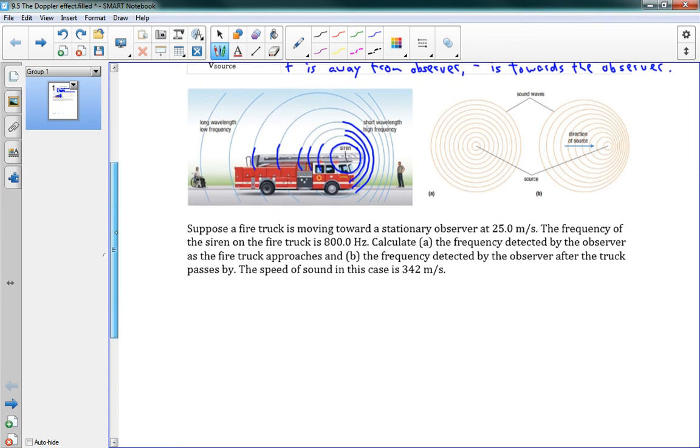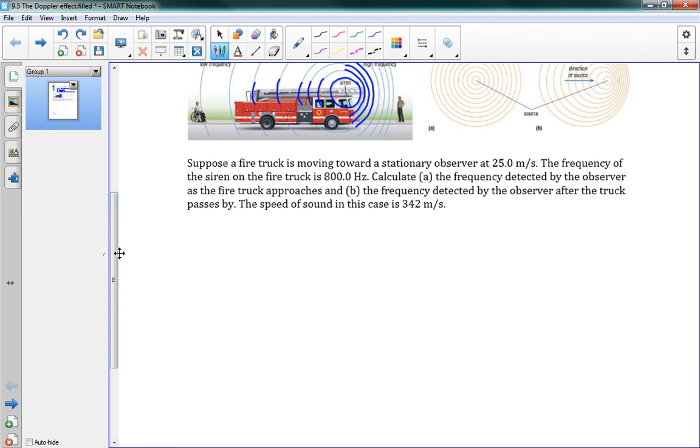Okay, let's try an example here. It says, suppose a firetruck is moving towards a stationary observer at 25 meters per second. The frequency of the siren on the firetruck is 800 hertz. We want to calculate the frequency detected by the observer as the firetruck approaches, and the frequency as the truck passes by. The speed of sound in this case is 342 meters per second.